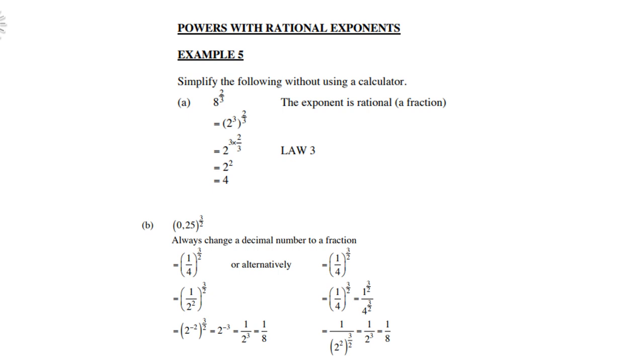Then a quarter is 1 over 2 squared. Take the 2 squared up, becomes 2 to the power negative 2. Then negative 2 times 3 over 2 gives you 2 to the power negative 3, which of course you can write as 1 over 2 to the power 3, which is 1/8.